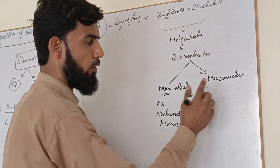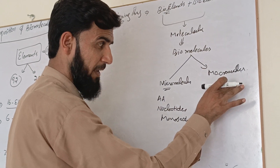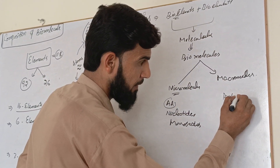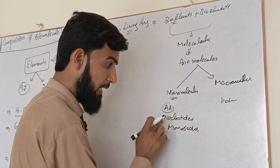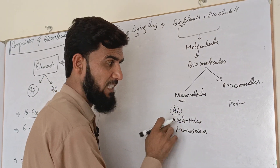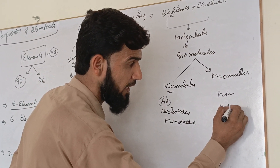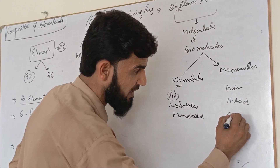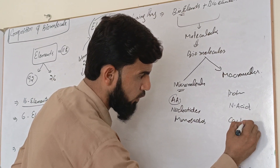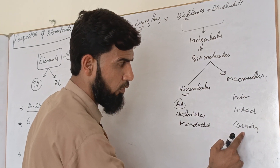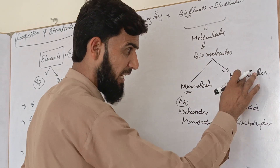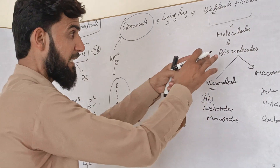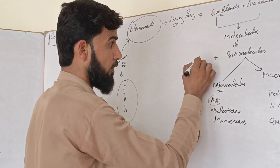Micromolecules polymerize to form macromolecules. Amino acids form proteins, which are macromolecules. Nucleotides form nucleic acids, which are macromolecules. Monosaccharides form carbohydrates such as glycogen, starch, and cellulose, which are macromolecules. These are the biomolecules.